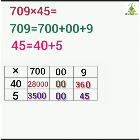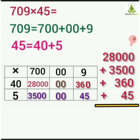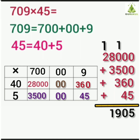Add all the products: 28,000 plus 3,500 plus 360 plus 45. There is no need to add the zeros. Add all units: 0 plus 5 is 5. Add all tens: 6 plus 4 is 10. Write 0 in the tens place and carry 1 to the hundreds place. Add all hundreds: 1 plus 5 plus 3 is 9. Add all thousands: 8 plus 3 is 11. Write 1 in the thousands place and carry 1 to the ten-thousands place. Add these numbers: 1 plus 2 is 3. So the answer of 709 multiplied by 45 is 31,905.